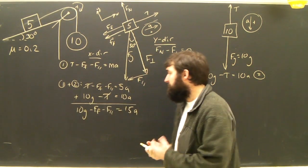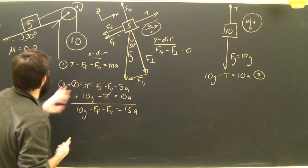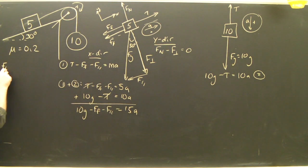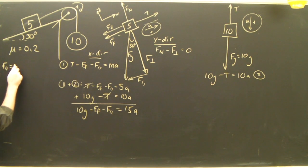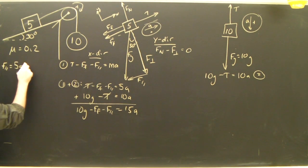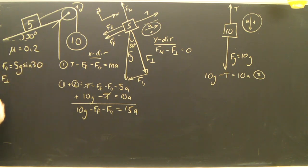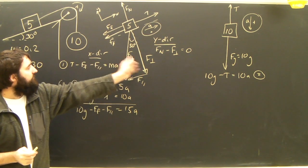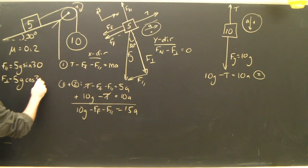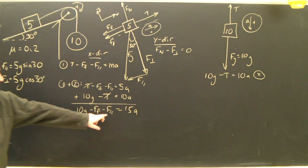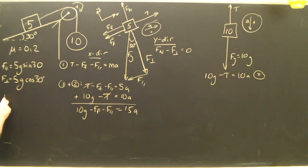Adding equation 1 and equation 2: T minus FF minus F_parallel equals 5A, plus 10G minus T equals 10A. The tensions cancel, and we get 10G minus FF minus F_parallel equals 15A. To finish this equation, we obviously need to know F_parallel and F_perpendicular.